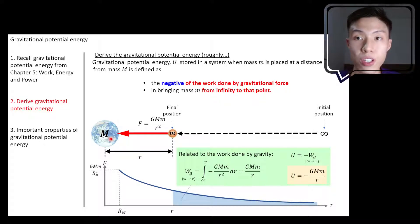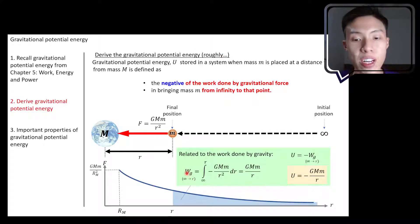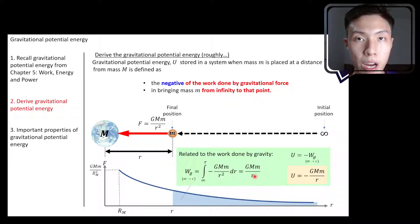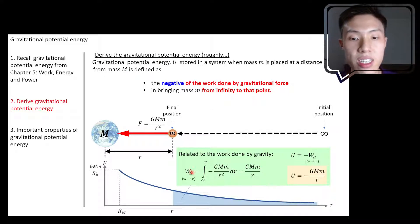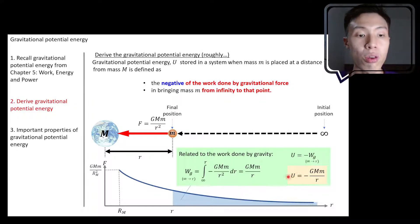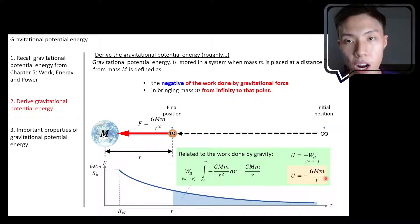In the previous video, we tried to derive the gravitational potential energy graph. We first found the work done by gravity in moving the object from infinity to the position of interest. The work done by gravity gives us G times big M times small m divided by r. We know that gravitational potential energy is just the negative of this expression, so gravitational potential energy equals negative G big M small m divided by r. That's the rough derivation from the previous video.